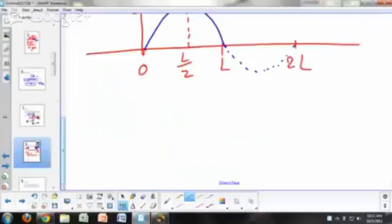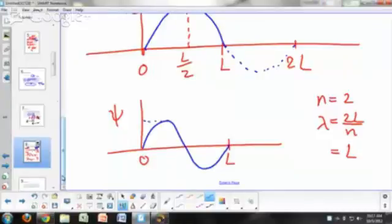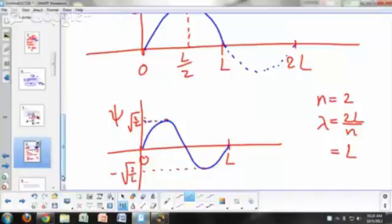What would it be for n equals 2? For n equals 2, what's our lambda going to be? It's going to be 2L over n. Our lambda is going to be L. So what would our plot look like? From x equals 0 to x equals L. Psi would be 1 full sine wave. Maximum value is what? Square root of 2 over L. And the minimum in your function occurs at negative square root of 2 over L. So what you have there, you have one node. A node is where your wave function changes sign, from positive to negative, where wave function goes to 0, changes sign, and goes to 0. That's called a node.